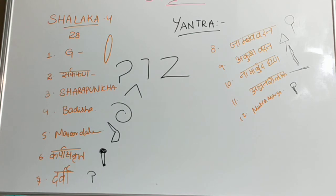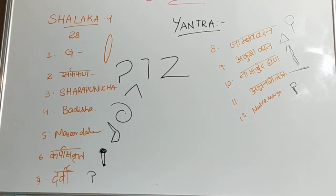Next, Sarpa Phanamukha Shalaka Yantra. The diagrammatic representation is chisel-like and Z-like, which represents the Sarpa Phanamukha Shalaka Yantra. Next, Sharapunkha Mukha — the tip resembles an arrow. It is used for Chalana Karma, meaning shaping and moving a foreign body. You can use this Sharapunkha Mukha Shalaka Yantra for that.